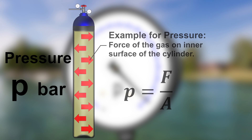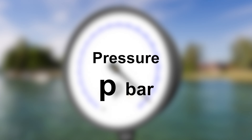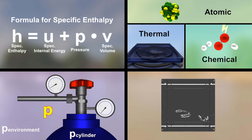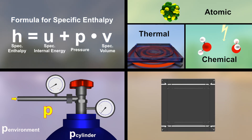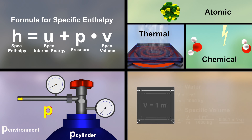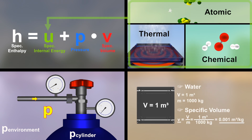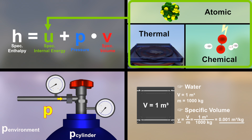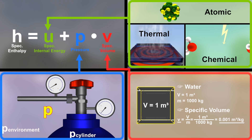In order not to confuse absolute pressure from relative pressure, which is often used in practice, the unit bar is sometimes used with an additional 'a' for absolute. The specific enthalpy h is the energy per unit of mass a fluid transports across a system boundary. Enthalpy h is composed of internal energy u and the work needed to move a mass of fluid across a system boundary, which is given by absolute pressure p times the specific volume v.